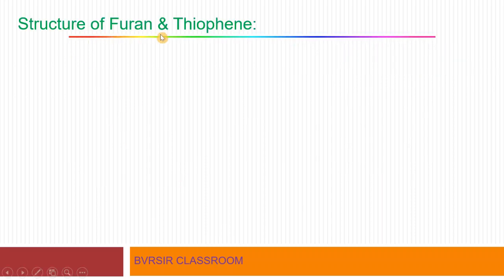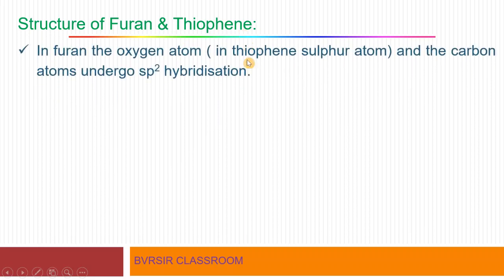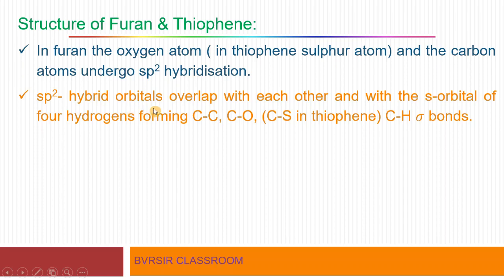Next, let us take up the structure of furan and thiophene. In furan, the heteroatom is oxygen; in thiophene, the heteroatom is sulfur — the rest of the structure is similar. In furan, the oxygen atom, and in thiophene, the sulfur atom, along with the carbon atoms, undergo sp2 hybridization. The sp2 hybrid orbitals overlap with each other and with the s orbital of four hydrogen atoms, forming sigma bonds: C–C, C–O (in furan) or C–S (in thiophene), and C–H sigma bonds.